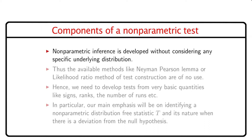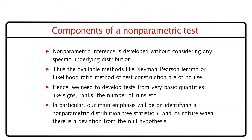Next, we discuss different components of a non-parametric test. Non-parametric inference is developed without considering any specific underlying distribution. Thus, the available methods like Neyman-Pearson lemma or likelihood ratio method of test construction are of no use. Hence, we need to develop tests from very basic quantities like signs, ranks, the number of runs, etc. In particular, our main emphasis will be on identifying a non-parametric distribution-free statistic t and its nature when there is a deviation from the null hypothesis.